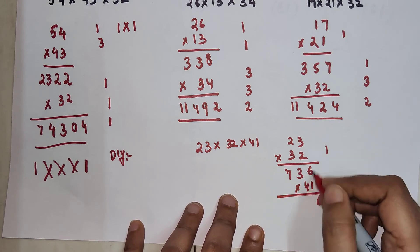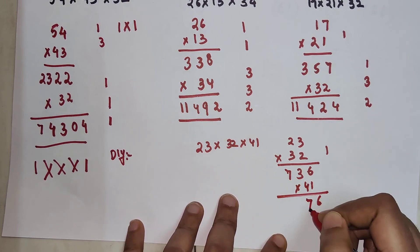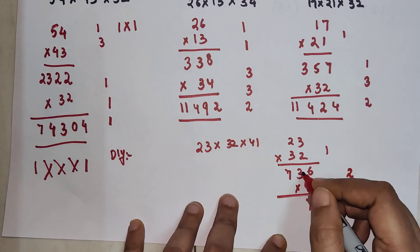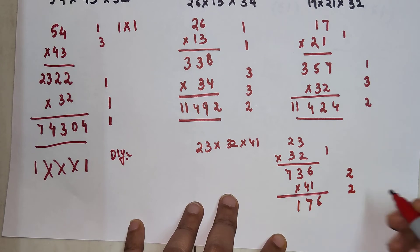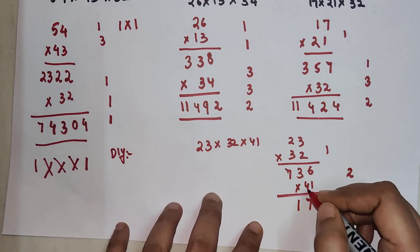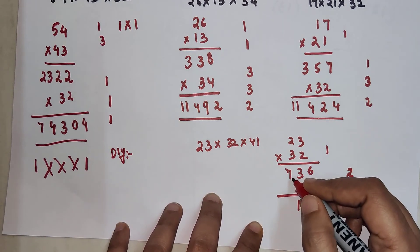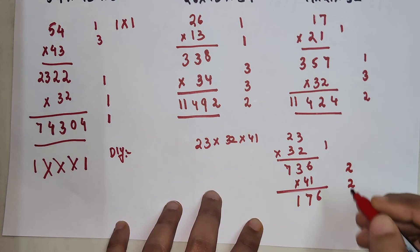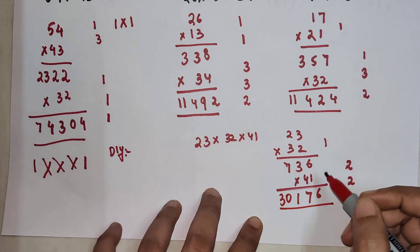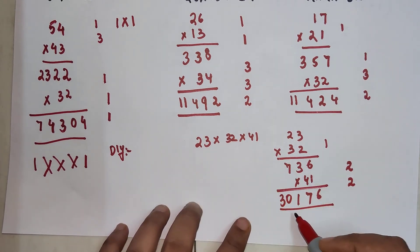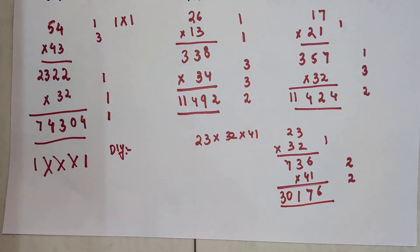Now this is 41. So again you will be left with 6, 3 plus 24 which is 27, 7, 2 is carried. 7 plus 12 which is 19 plus 2, 1, 2 carried. So again then 4 into 7 is going to get you 28 plus 2 is going to get you 30. So final answer for this multiplication is 30,176.